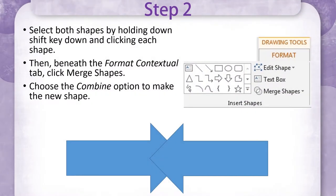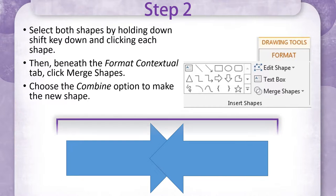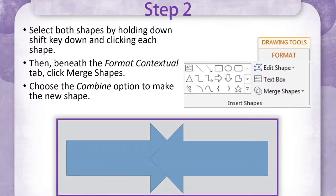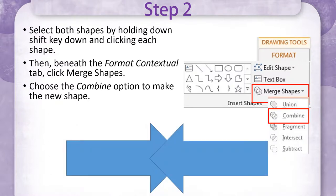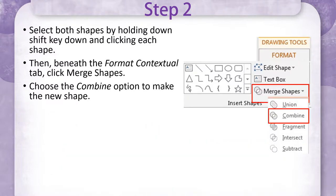Step two, you've already positioned your shapes on your slide in the desired position. Now select both shapes by holding the shift key down and clicking each shape. Or you can click over the shape and drag to include in the selection. Then find the format contextual tab on the ribbon and choose merge shapes. When the drop-down shows, choose the combine option to make your new shape.